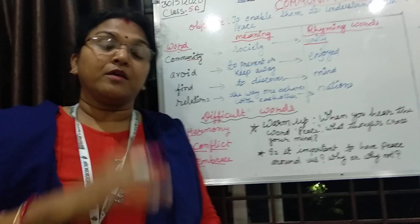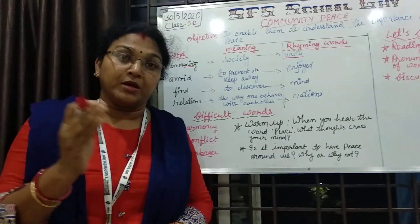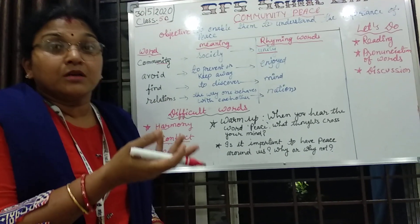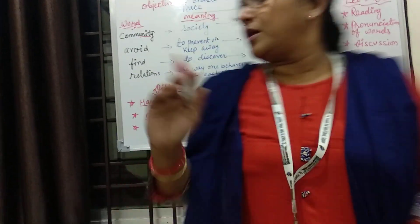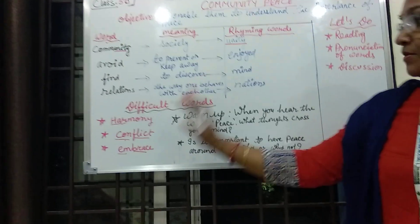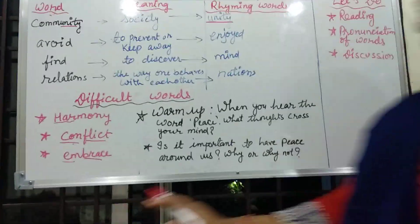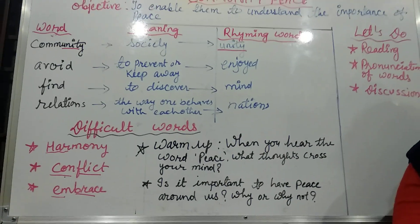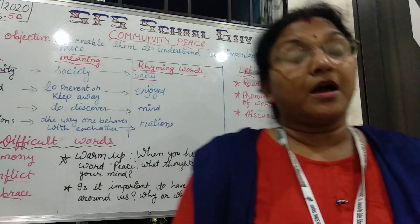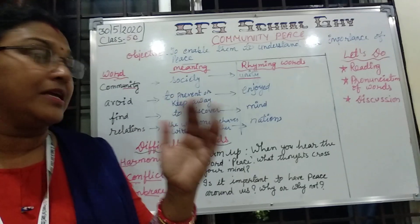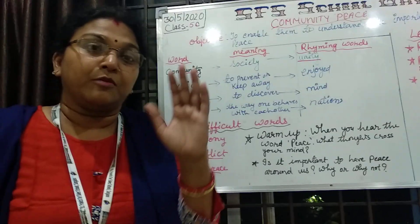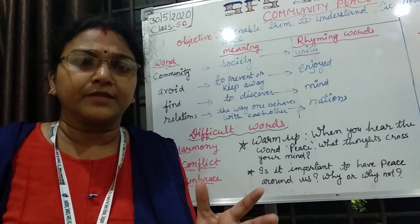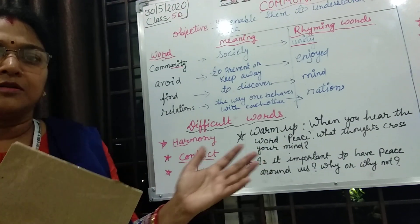This is how, when we want to pronounce a word, it is better to divide the word into syllables — it becomes easier for you to pronounce the word. Now there is a question in your book: when you hear the word peace, what thought comes in your mind? We think about calmness, we think about quietness. When we talk about peace, we need that the place where we are living should not have any conflict, no contradictory ideas, and we want things to go very smoothly.